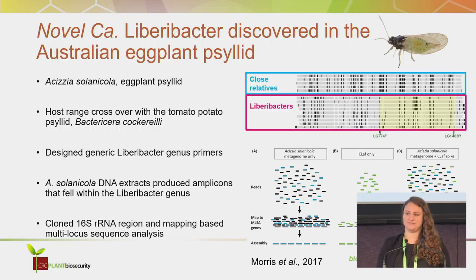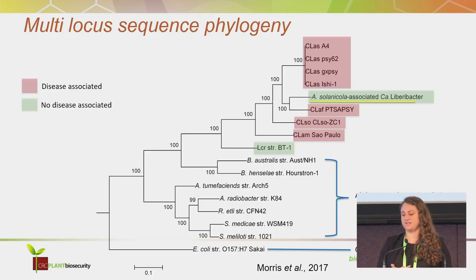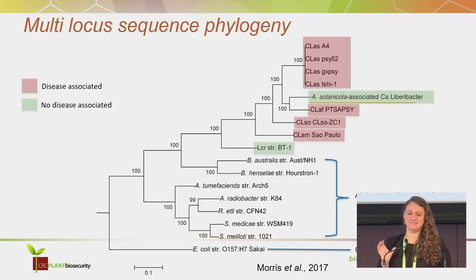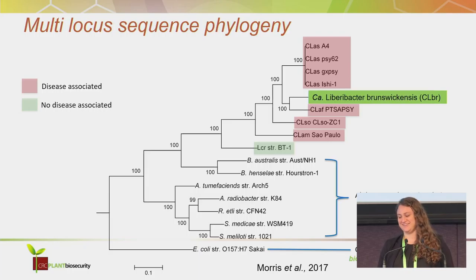I cloned the 16S region and developed a multi-locus sequence analysis. This is the phylogenetic tree of the seven genes I used for my multi-locus sequence analysis. These seven genes were concatenated and strongly supported that I had a new Liberibacter species. The Echizia solanocola-associated Liberibacter fell within the Liberibacter genus on a unique node with strong bootstrap support.